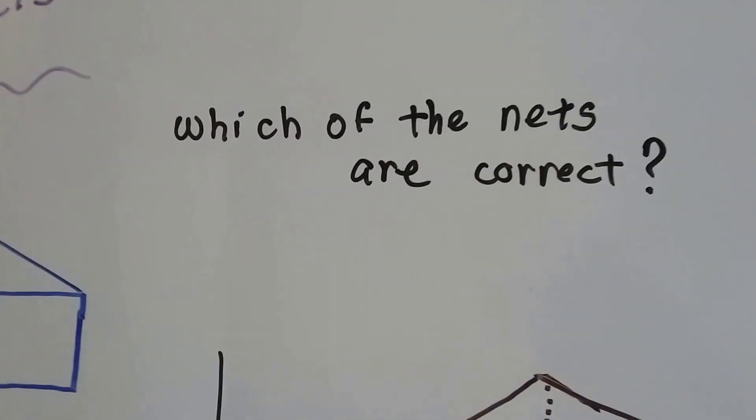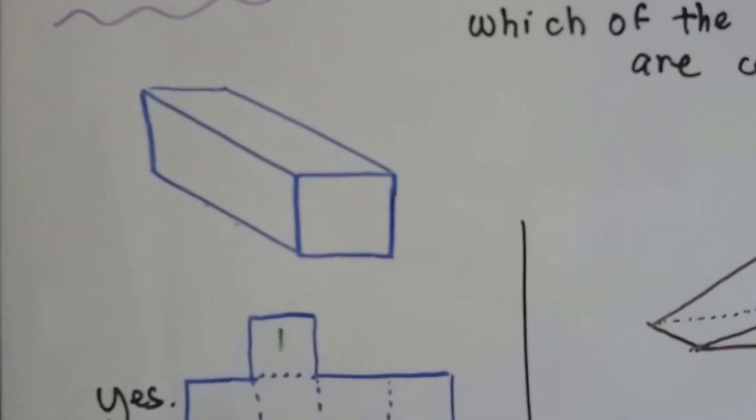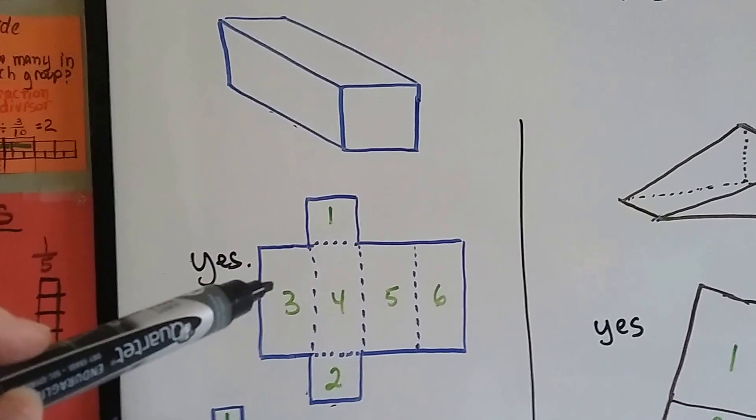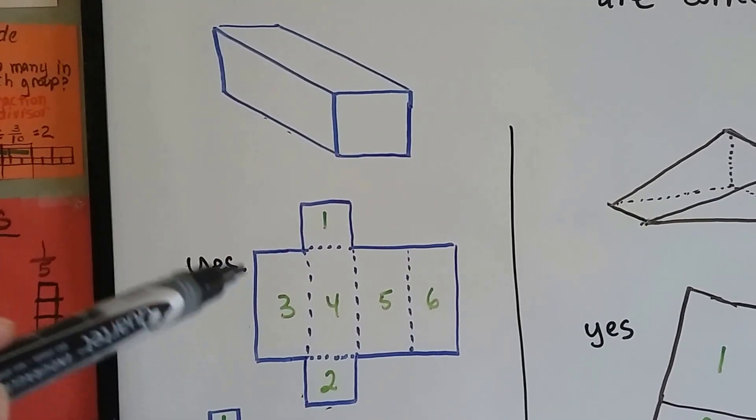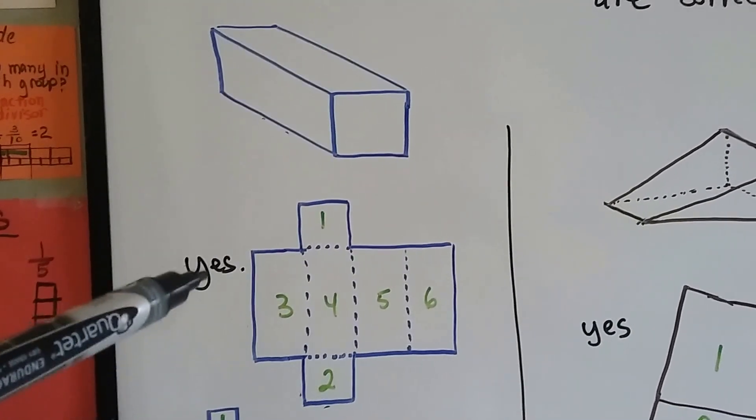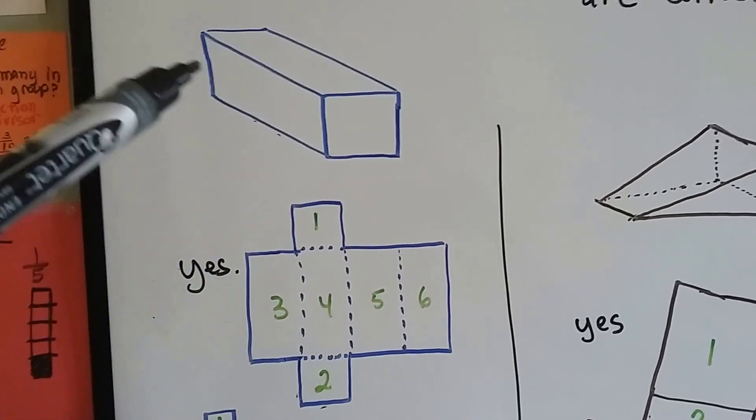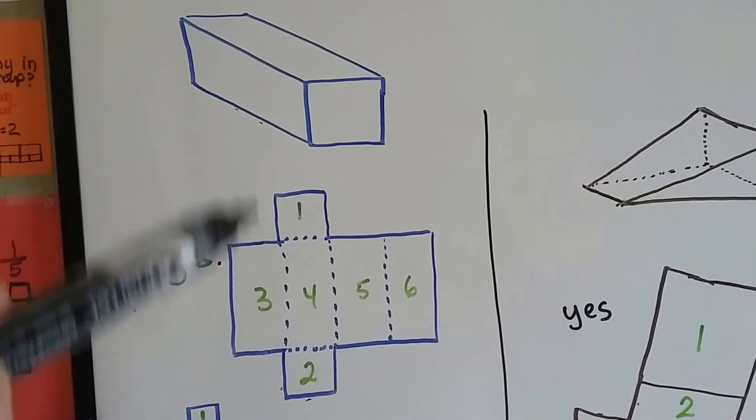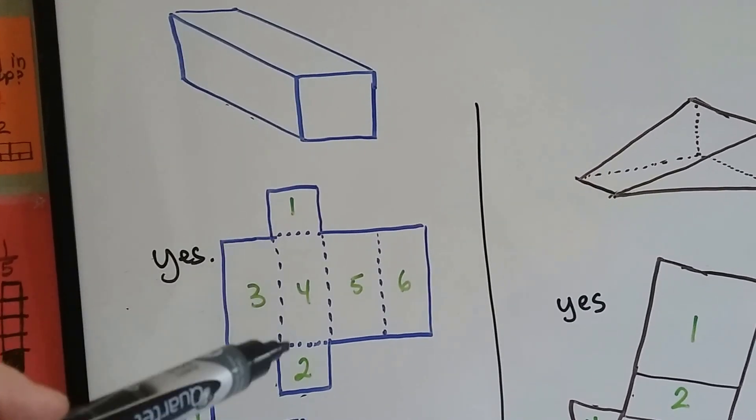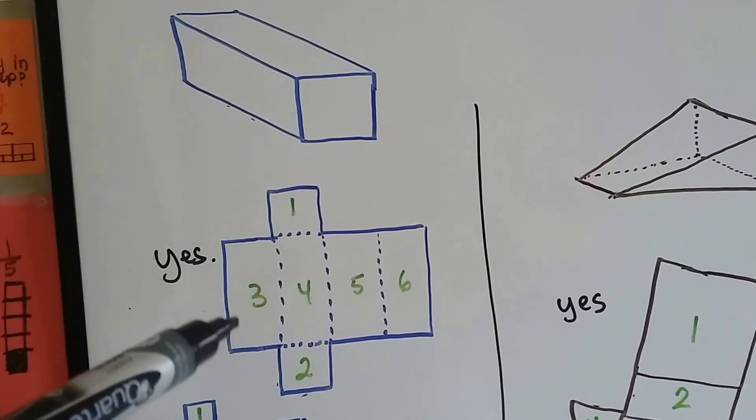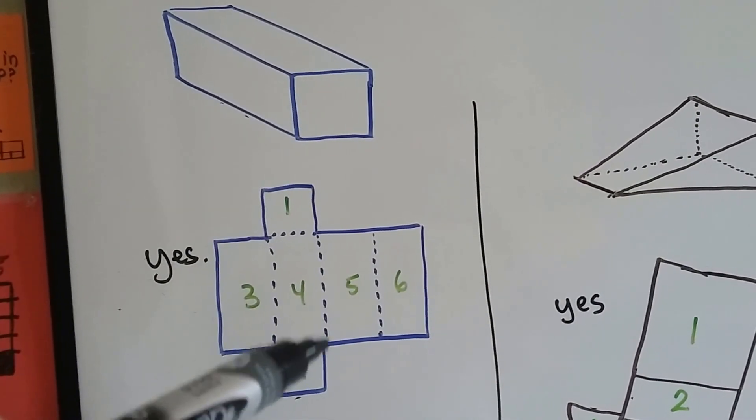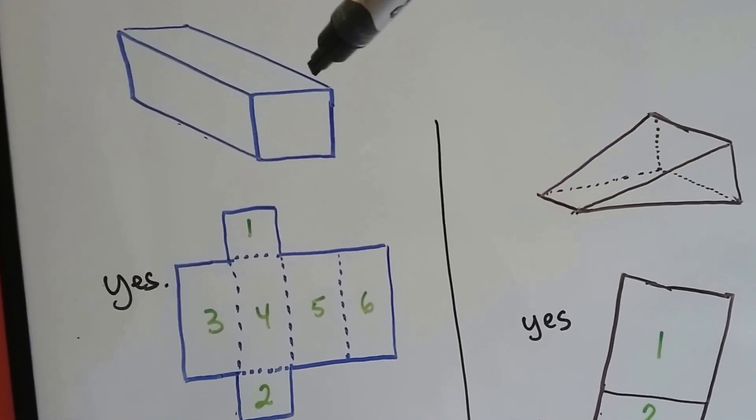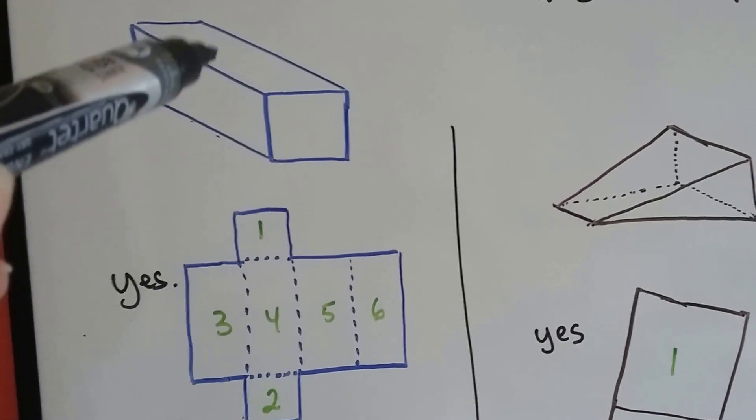So which one of these nets are correct? This one looks like a stick of butter, doesn't it? If we unfolded it, would it look like this? Yes, it would. I know it helps that I have the word yes there. But we have the two square sides on each side. And then this line right here would be this line. So number 3 would be this side. And then it would fold right here. And then 5 would be the side that's hiding behind the back, and 6 would be the top part.